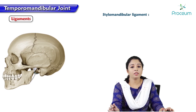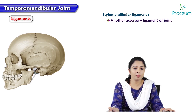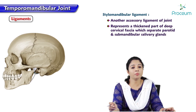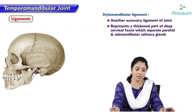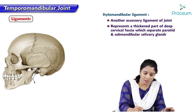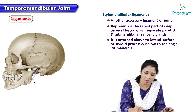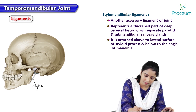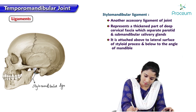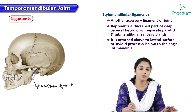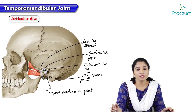The stylomandibular ligament is also an accessory ligament of the temporomandibular joint. It represents a thickened part of the deep cervical fascia which separates the parotid and the submandibular salivary glands. It attaches above to the styloid process and below to the angle of the mandible.